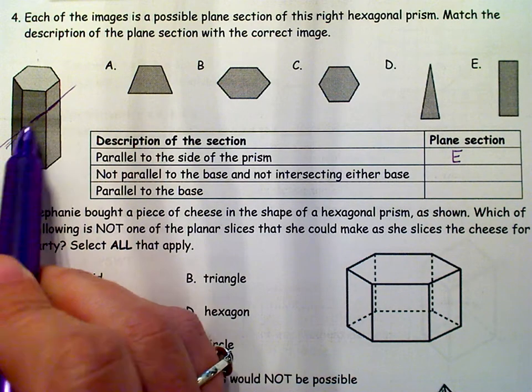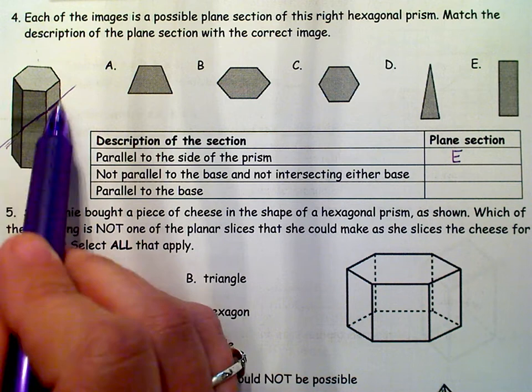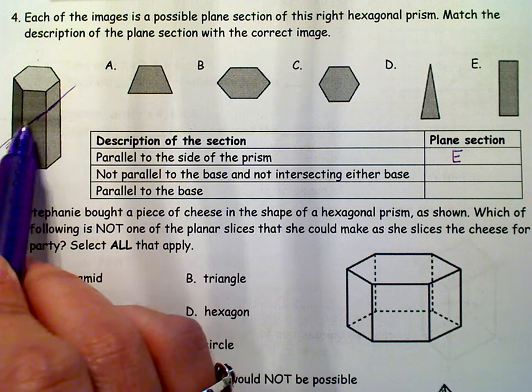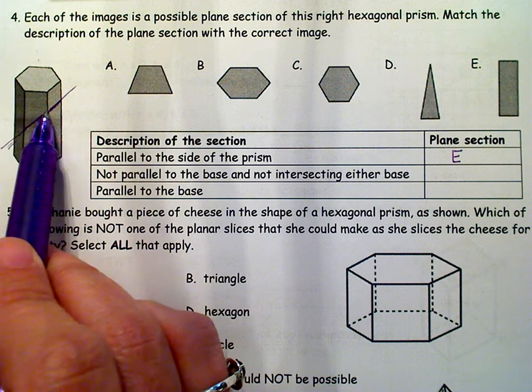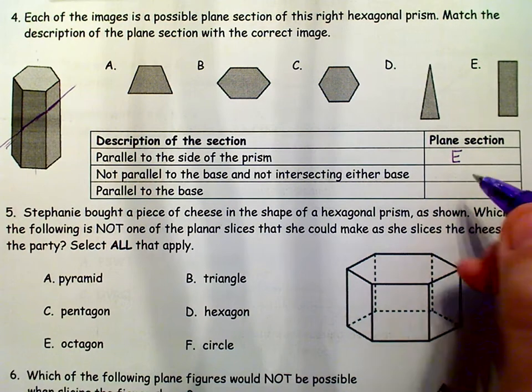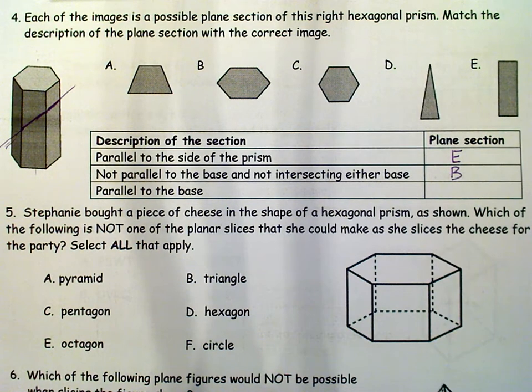It is going to be a hexagon because it's going to cross six of those faces, but this one is going to be long, and then the one that's on the opposite side is actually going to be a little bit longer because you're going at an angle instead of straight across. So B is going to be the correct answer.